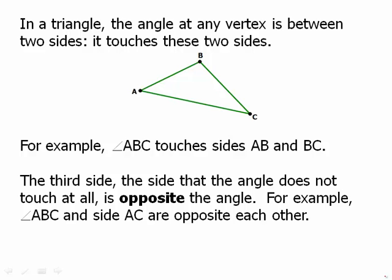The third side, the side that the angle does not touch, is opposite the angle. For example, that same angle ABC and side AC are opposite one another. So, that's an important relationship. And we'll be talking about that a lot. The relationship of the angle and its opposite side.